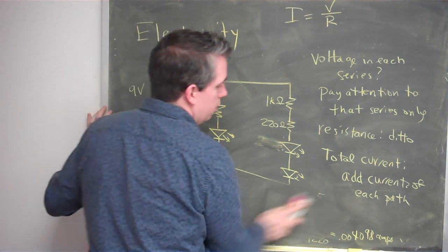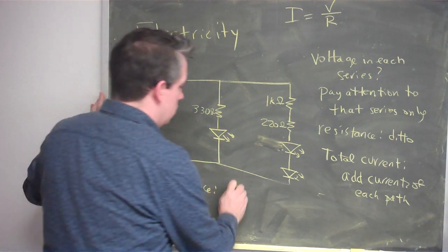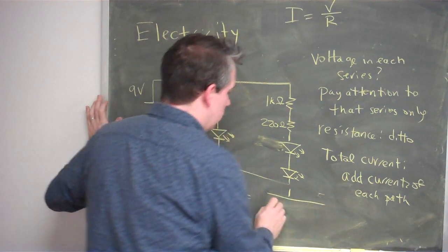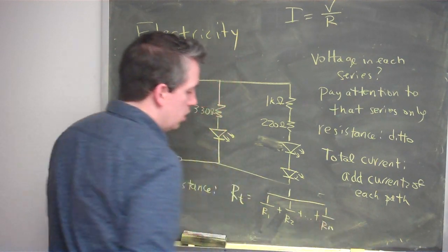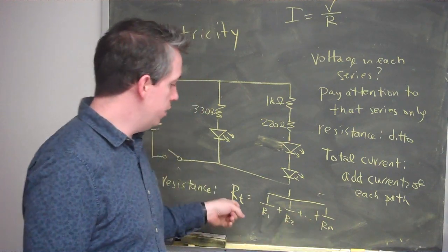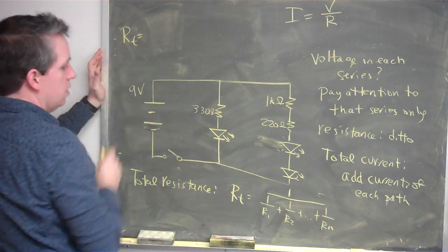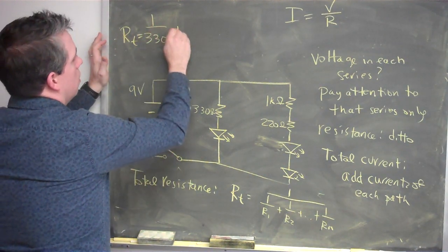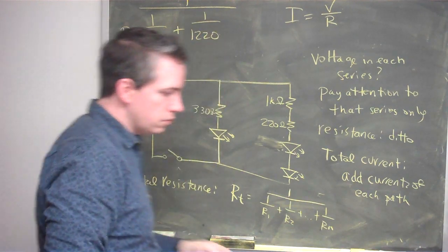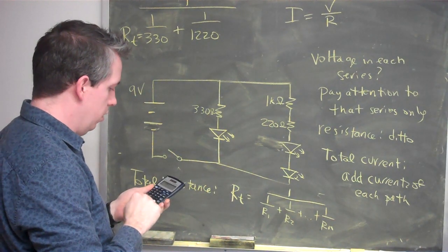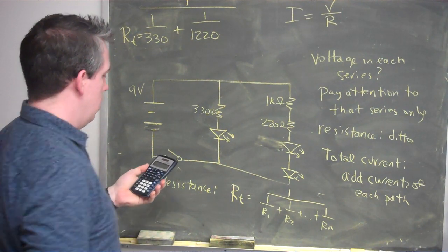For the total resistance, there's a more complicated formula. The total resistance RT equals 1 over (1/R1 + 1/R2 + ... + 1/Rn), where each R is the resistance from a different path. In our case, the total resistance equals 1 over (1/330 + 1/1220). Plugging that into a calculator — 1 divided by 330 plus 1 divided by 1220, then take 1 divided by that sum — we get 259.74 ohms total resistance.